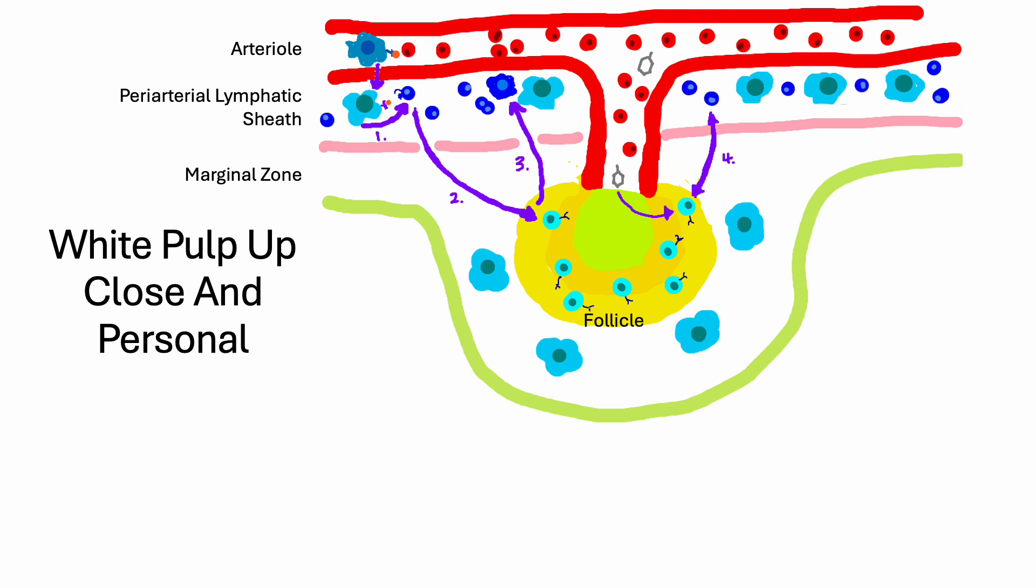B cells become antibody-producing plasma cells, as you see in number 3, either in the red pulp or the white pulp. The plasma cells can be located in either one. Antibodies leave the plasma cells to travel widely through the systemic circulation.